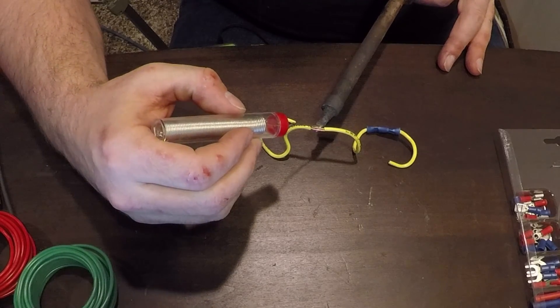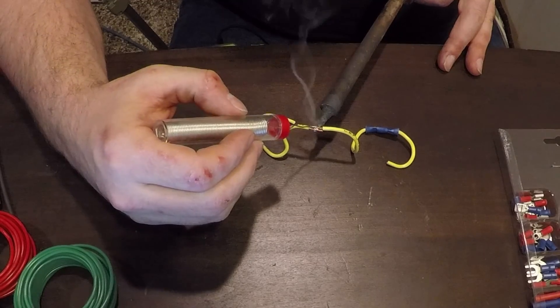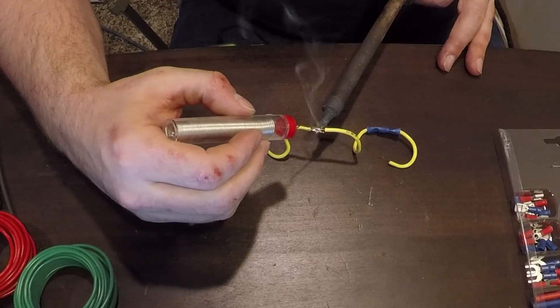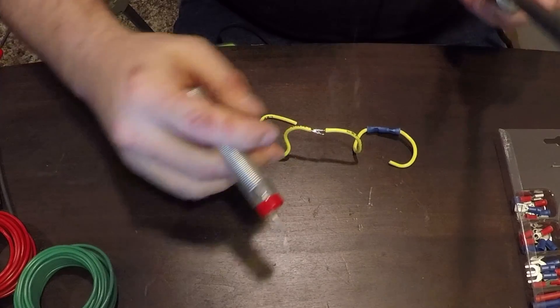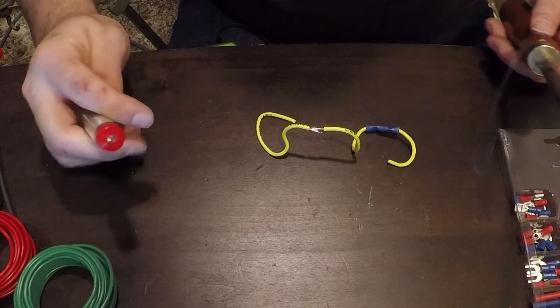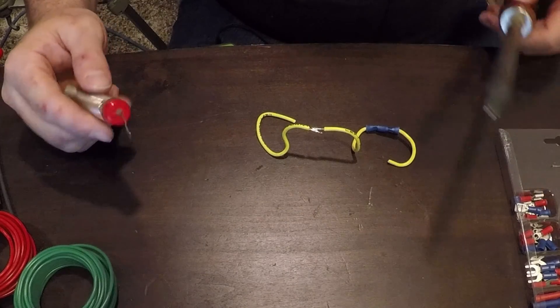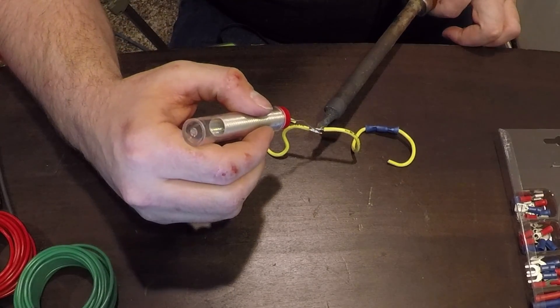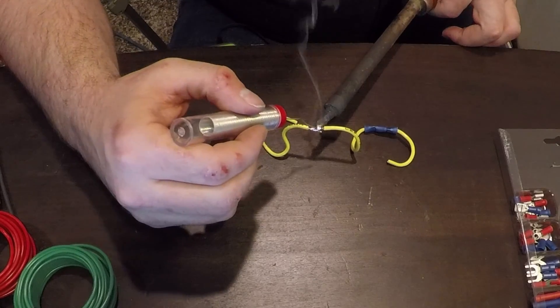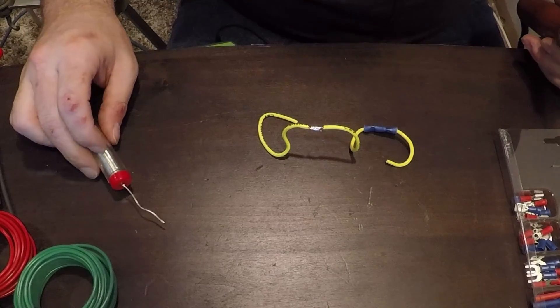So you want to get the wire nice and hot. And as it gets hot, the solder is going to soak up into it. And as that cools, the solder is going to hold the two wires together. That's not very clean. I think I can clean it up a little bit. And that should do the job nicely.